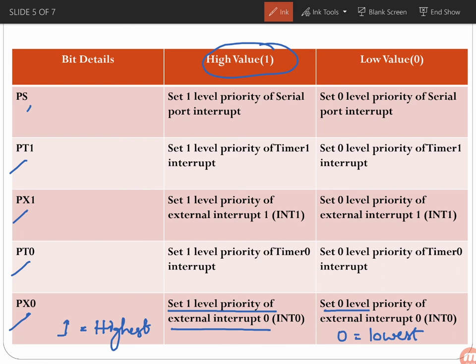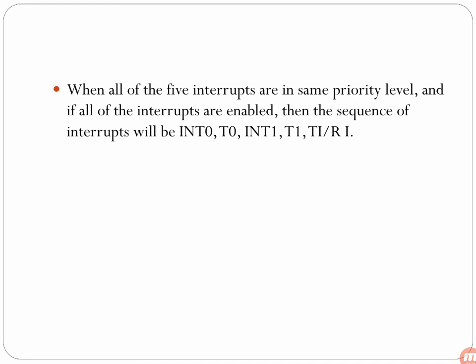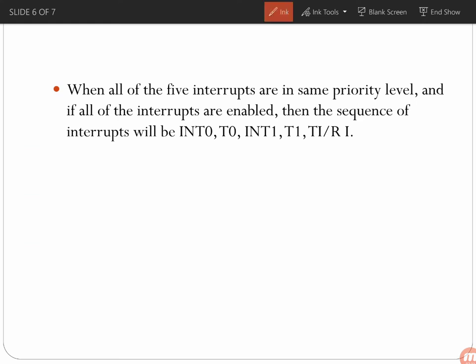If all five interrupts are set to high priority, the system falls back to default priorities. By default, INT0 has the highest priority, followed by Timer 0, INT1, Timer 1, and then the Serial Port interrupt. When all five interrupts are at the same priority level and all are enabled, this default sequence is used, and these default interrupt priorities apply even if you don't explicitly program them.